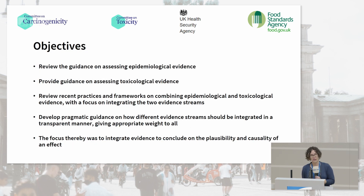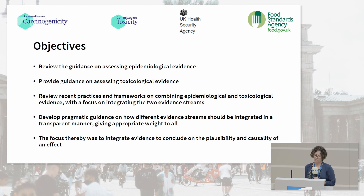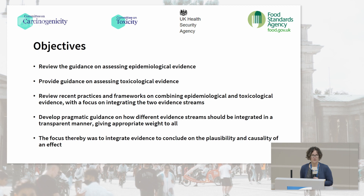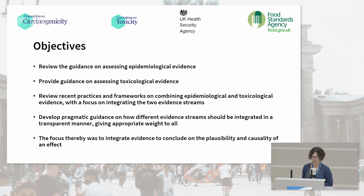The objectives of the working group were to review the guidance on assessing epidemiological and toxicological evidence, but also to review recent practices and frameworks on combining epidemiological and toxicological evidence and other evidence streams. The aim was to develop pragmatic guidance on how different evidence streams should be combined in a transparent manner, giving appropriate weight to all, with a focus on integrating evidence to conclude on the plausibility or causality of an effect.